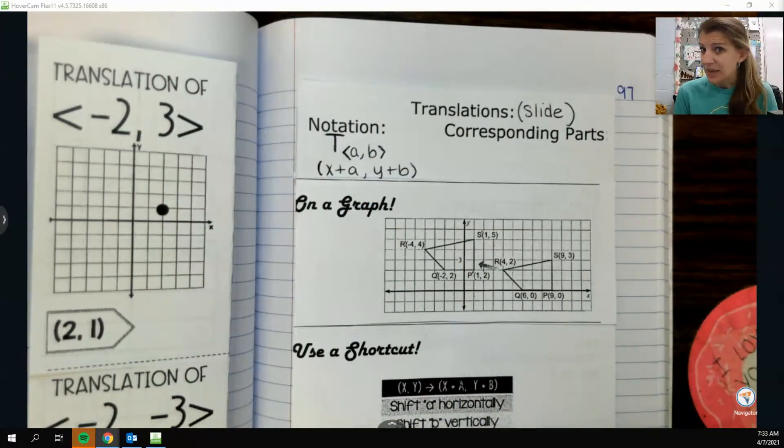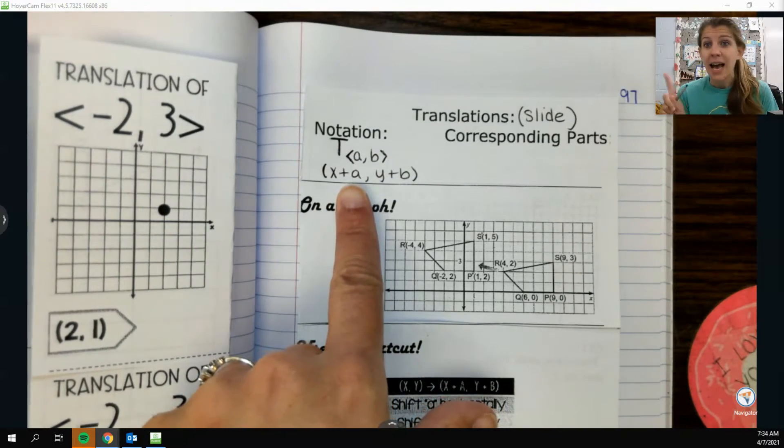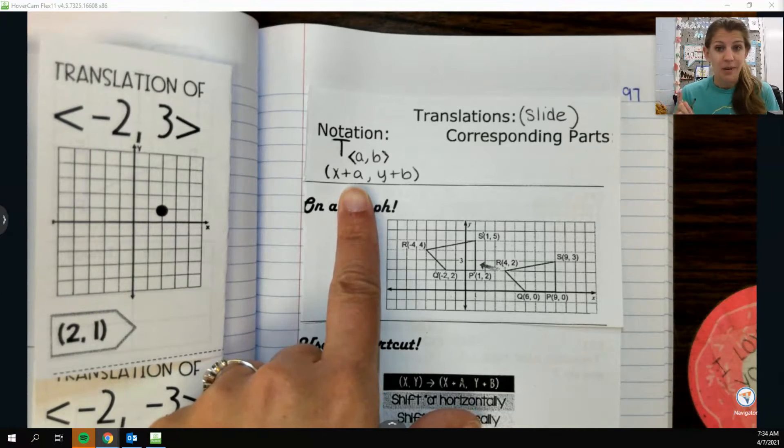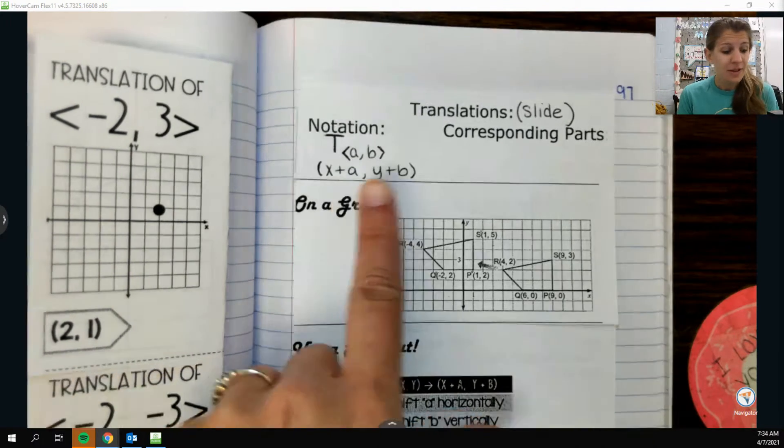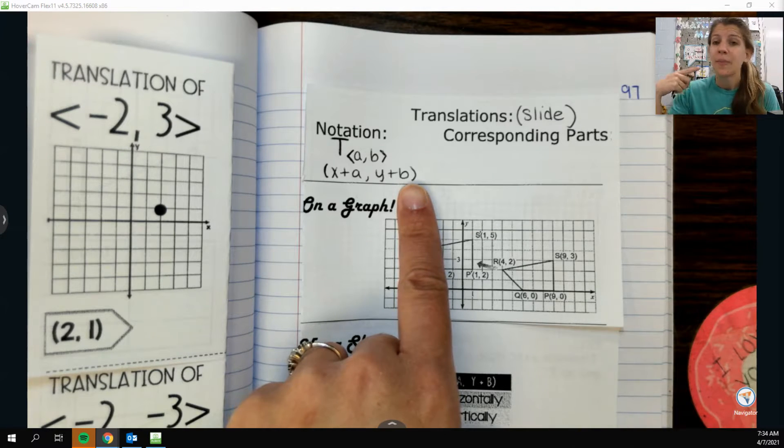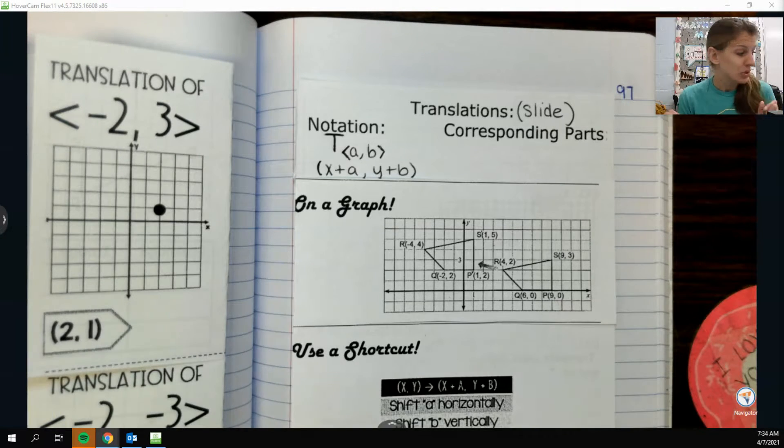Another way to describe a translation is using coordinate notation, which in that case I'm using like an ordered pair. In my parentheses, I would do X plus A comma Y plus B, where A and B stand for the same thing. A is telling me how X is changing, so moving left or right, right if it's positive, left if it's negative. And then B tells me how Y is changing, so up and down, up if it's positive, down if it's negative. Easy, simple stuff.